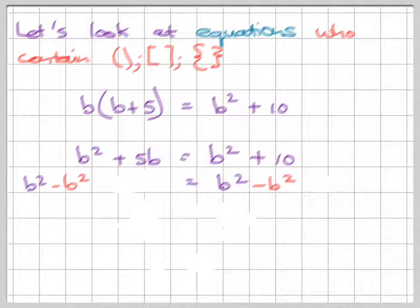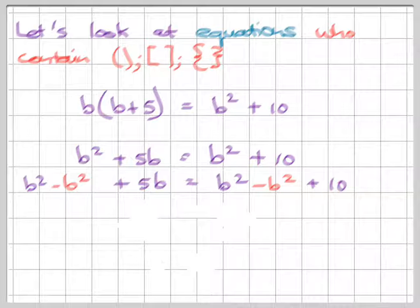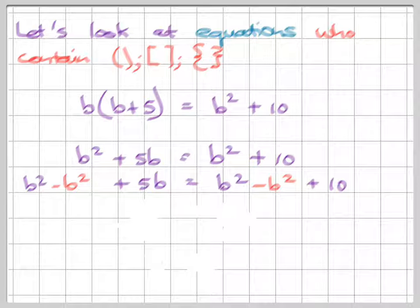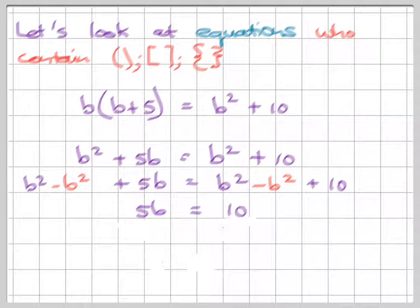And then we also just write the rest as it is plus 5b and plus 10. Now when we simplify this piece here, we can see we actually have plus b² minus b². So these two are canceling each other out. So doing our inverse on the opposite sides has actually eradicated b². So what are we left with? We're left with 5b = 10.